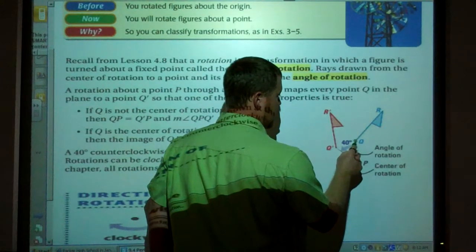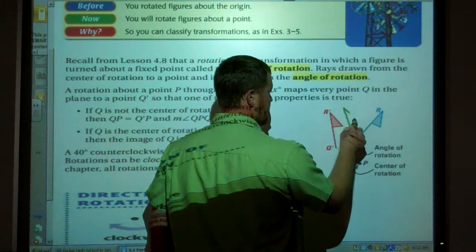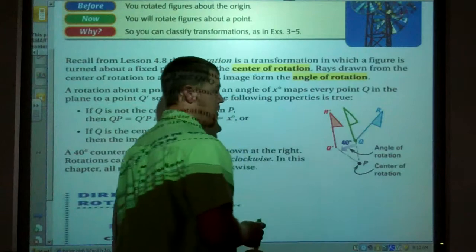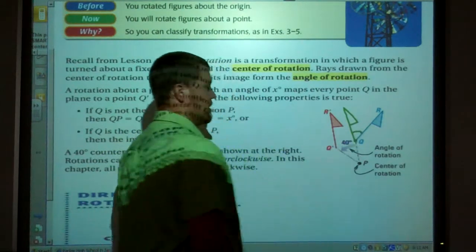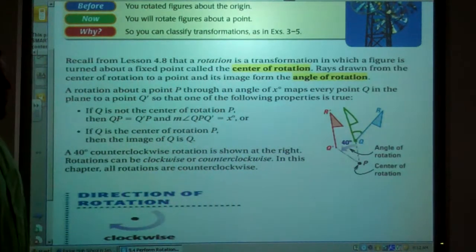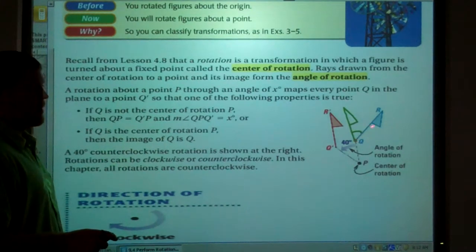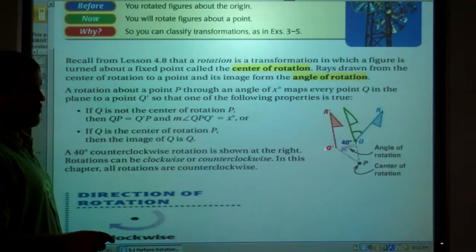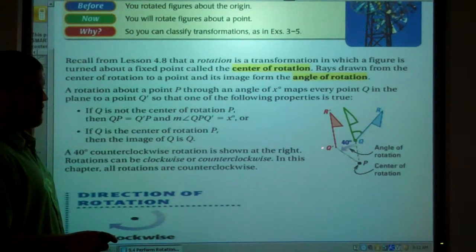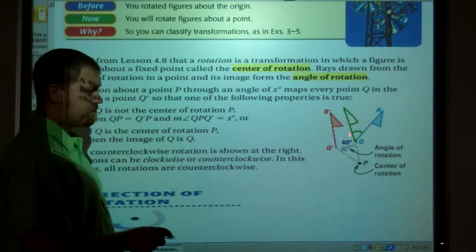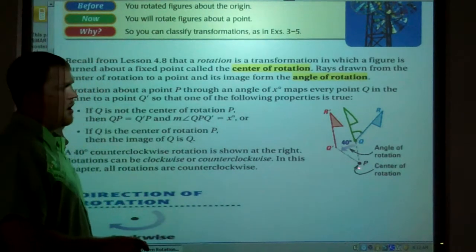If point Q is my center of rotation, then my figure would be somewhere like this. Now this is my angle of rotation. So if the point of rotation is one of the points of the figure, then one of the points is for sure the image point as well. Q' would be the same point then in that instance.